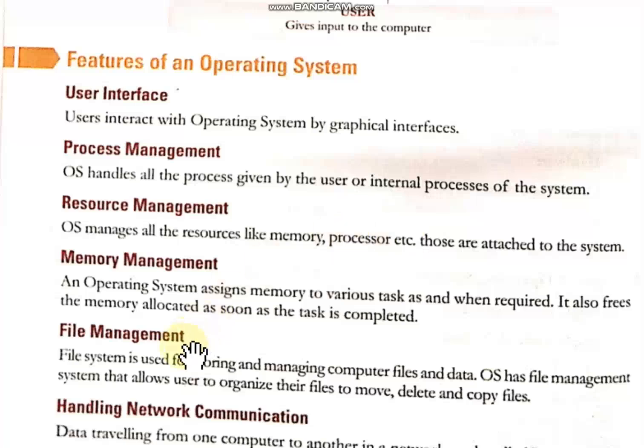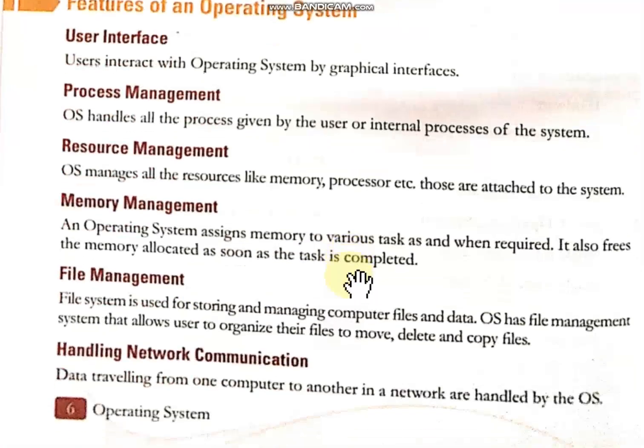Next is memory management. In a laptop we are assigned memory where we can store our data. The operating system manages how memory gets allocated or freed — it assigns memory to tasks whenever required. Then we have file management. We all use the file system for storing and managing our data. The operating system supports a file management system that allows us to organize files — you can delete, copy, or move files, all with the help of the operating system.